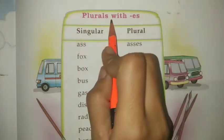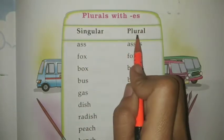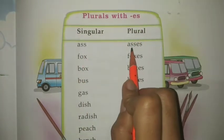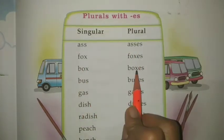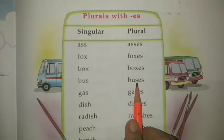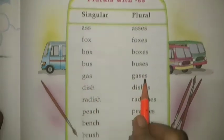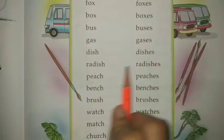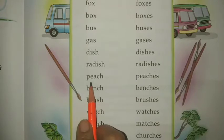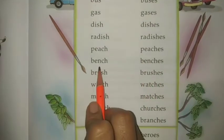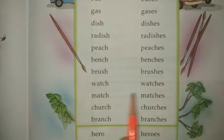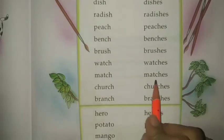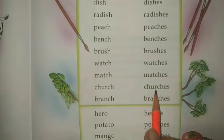Plural with ES. Words ending in S, X, SH, CH add ES to form plural: fox → foxes, box → boxes, bus → buses, gas → gases, dish → dishes, radish → radishes, peach → peaches, bench → benches, brush → brushes, watch → watches, match → matches, church → churches, branch → branches.